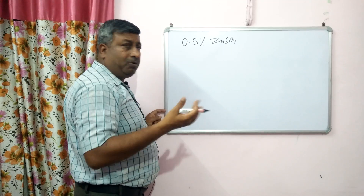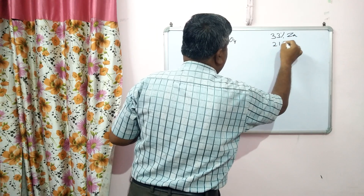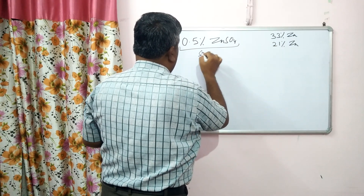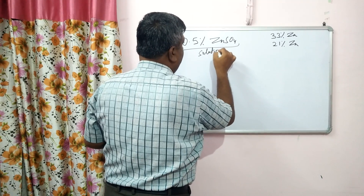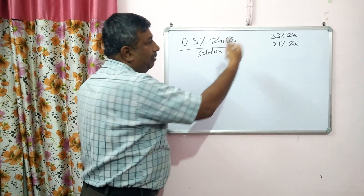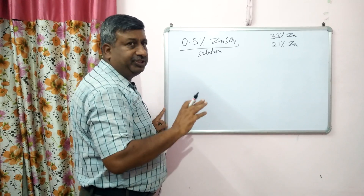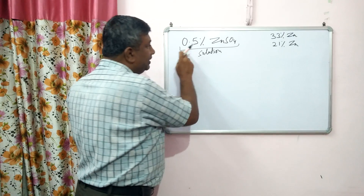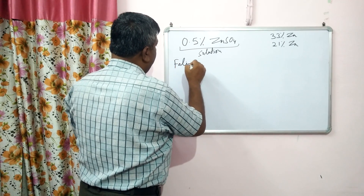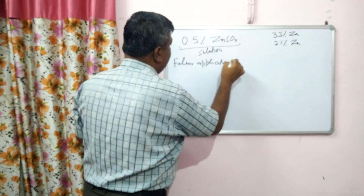If it is monohydrate, the zinc content is 33%, and if it is heptahydrate, it is 21% zinc. But we have to make a solution of 0.5%. If the zinc content is 21%, then two or three applications may be needed, while with 33% zinc, one or two applications are sufficient. This foliar application is done in a standing crop whenever there is zinc deficiency.